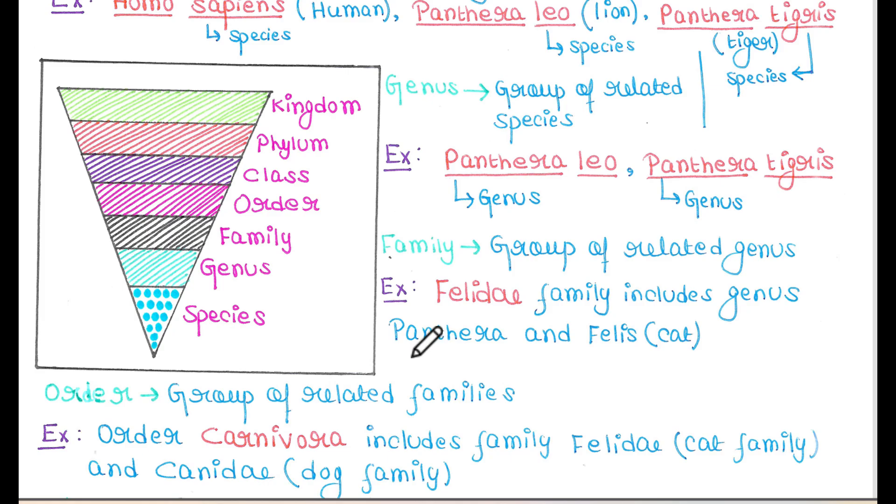If you see this image and start from kingdom, the decreasing order will be kingdom, phylum, class, order, family, genus, species. Now if you start from species, the increasing order will be species, genus, family, order, class, phylum, kingdom. I can provide a mnemonic.